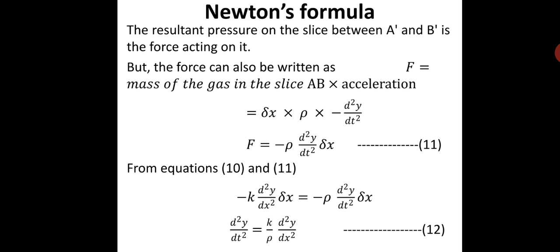The resultant pressure on the slice between A-dash and B-dash is the force acting on it. Since the area of cross section is unity, the force on the slice equals the pressure. By Newton's second law of motion, force equals mass times acceleration. Mass equals volume times density: volume of the gas slice is delta-x and rho is the density, so mass equals delta-x times rho. Acceleration is d²y/dt², where y is the displacement.